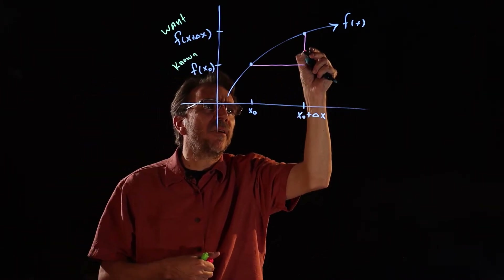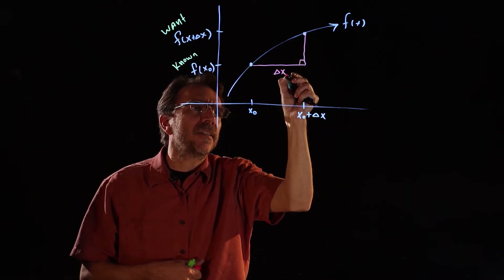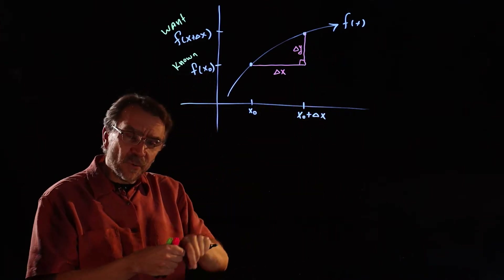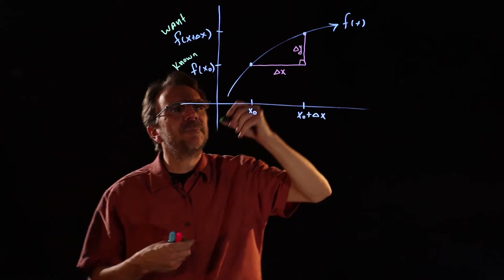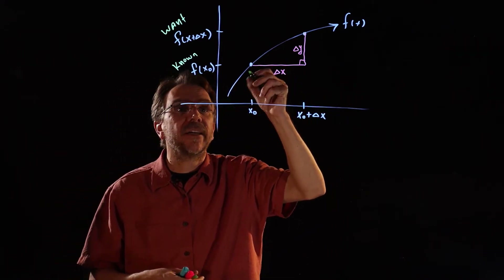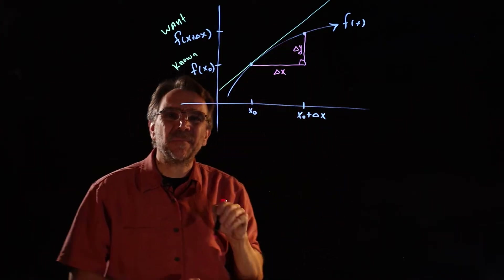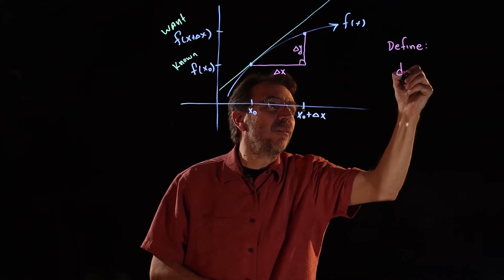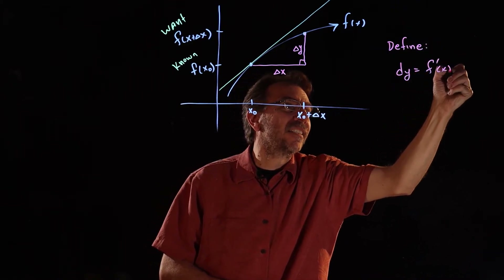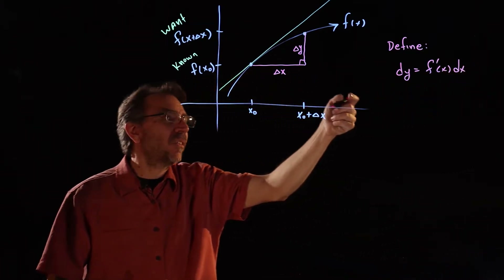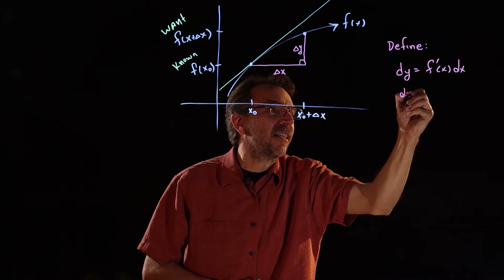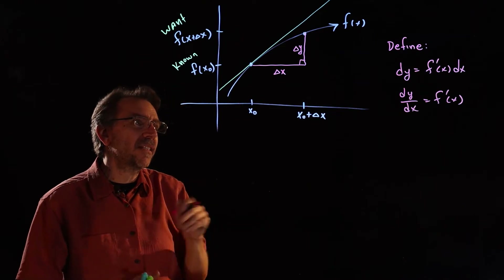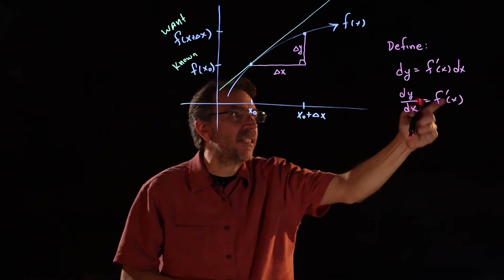If we drop in altitude and form a triangle, this distance is delta x and this distance is delta y. The derivative is the slope of the tangent line. We define the differential dy to equal f prime of x times dx. Thinking of dy over dx as a rise over run — the slope of the tangent line — the rise is the differential dy and the run is dx, which equals delta x.